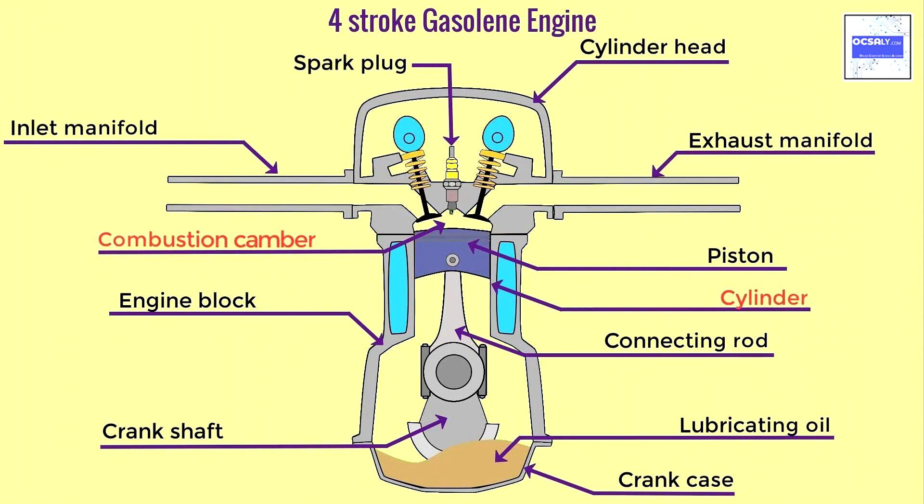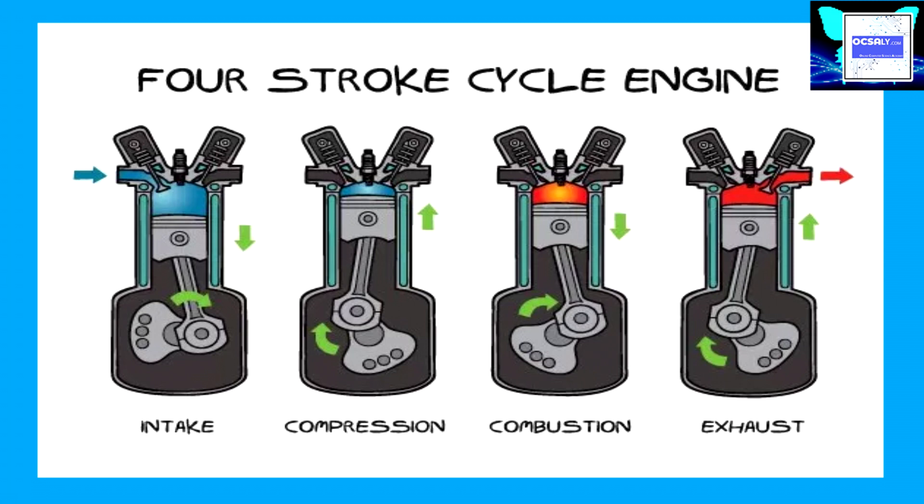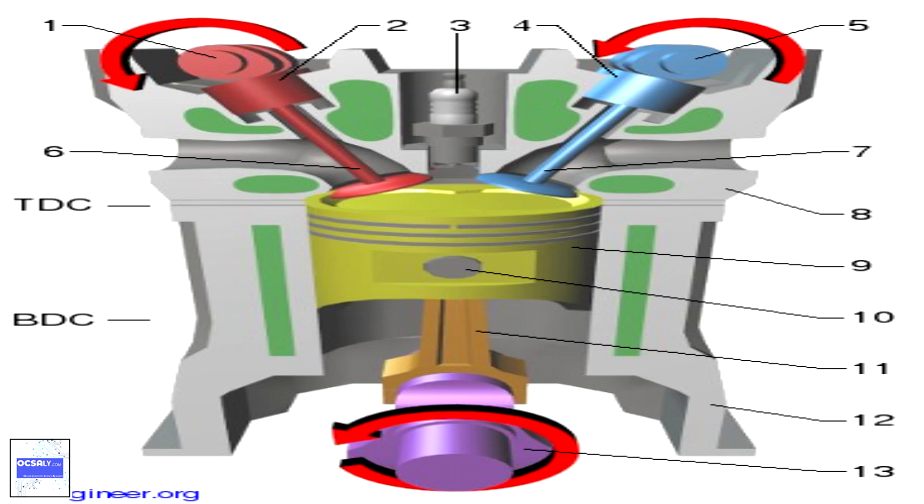A four-stroke, also four-cycle engine, is an internal combustion engine in which the piston completes four separate strokes while turning the crankshaft. A stroke refers to the full travel of the piston along the cylinder in either direction.